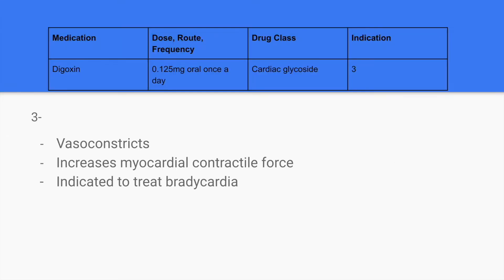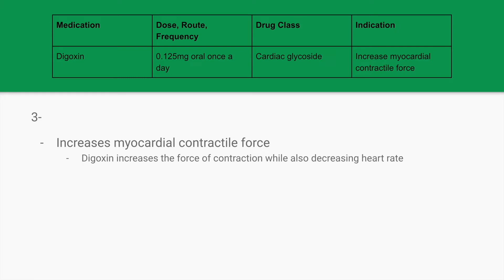The third medication is digoxin, given 0.125mg oral once a day. It is a cardiac glycoside. Digoxin increases the myocardial contractile force. It is a unique medication because it increases the force of contraction while also decreasing the heart rate. So for someone who has a fast heart rate but also needs help to increase blood pressure, this is a good medication for that.